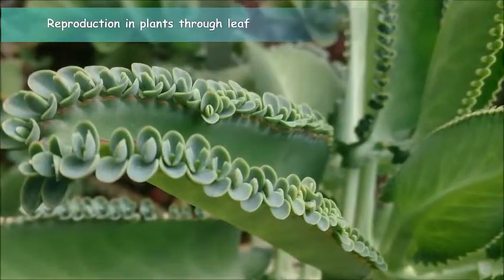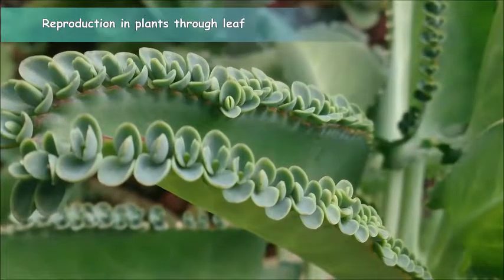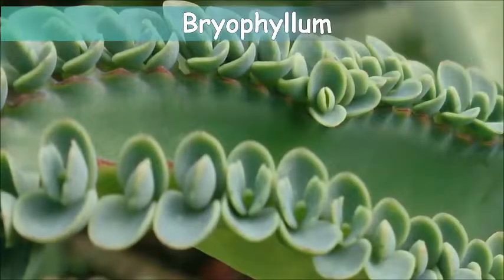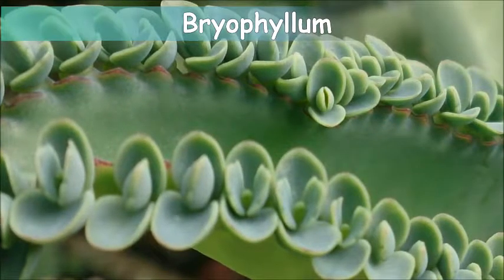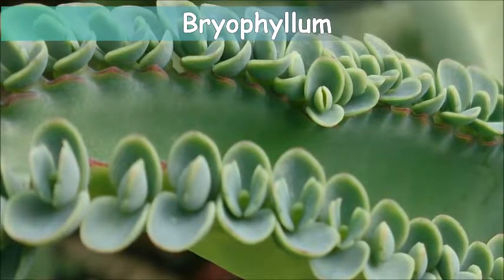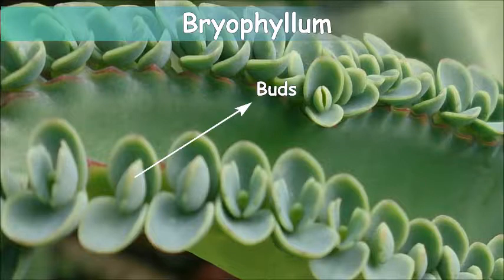Lastly, let's see the reproduction in plants through leaf. In case of bryophyllum, that is the sprout leaf plant, a mature leaf bears buds at its margins. From these buds, new plants develop.